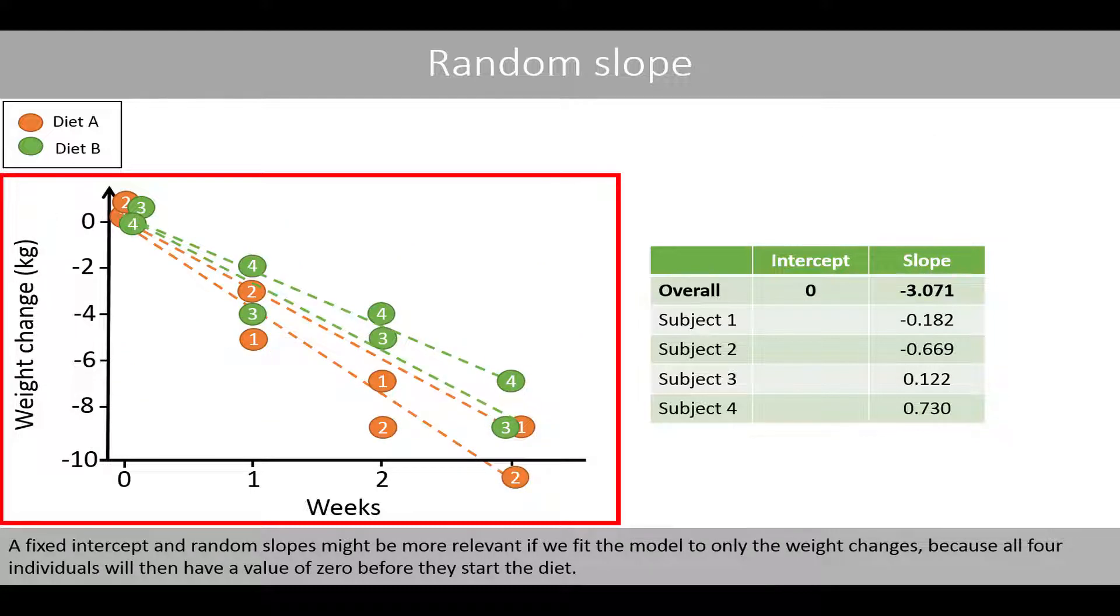A fixed intercept and random slopes might be more relevant if we fit the model to only the weight changes, because all four individuals will have the value 0 before they start the diet.